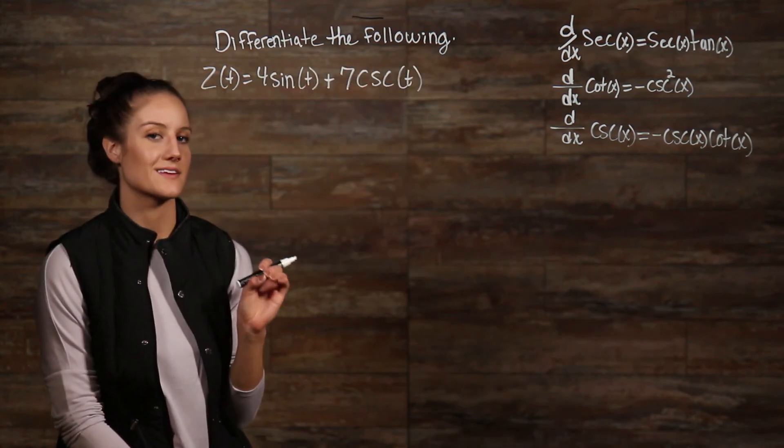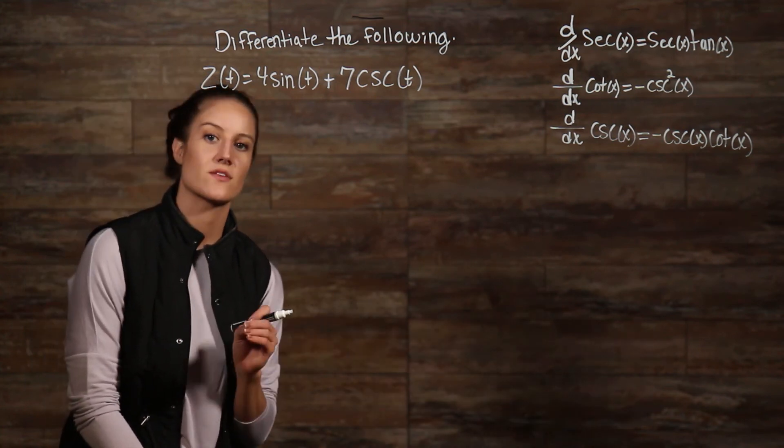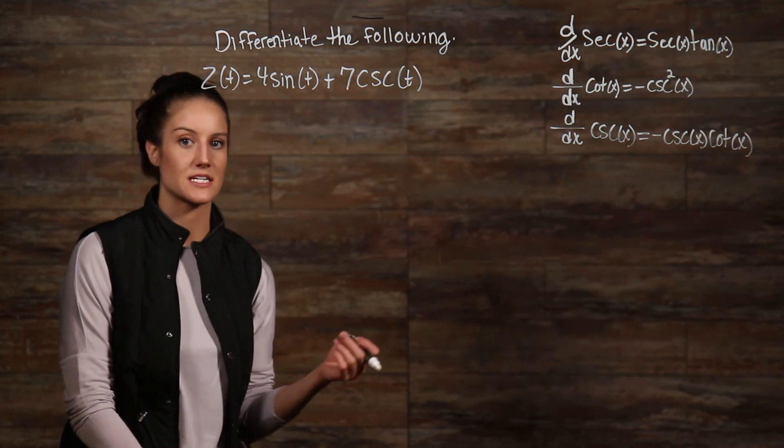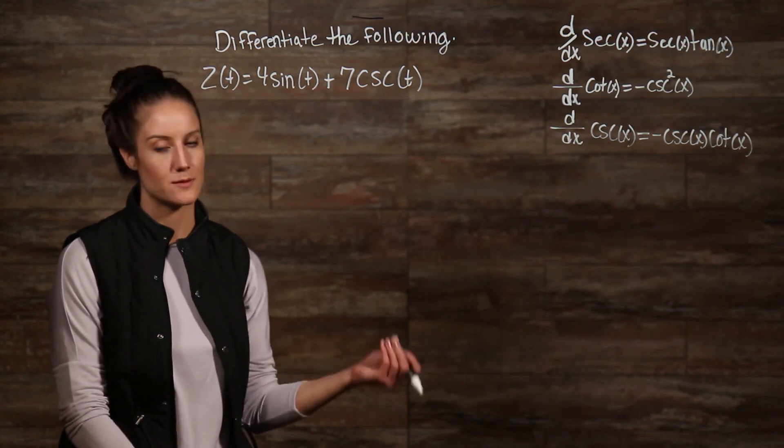This problem is fairly simple. All we need to do is recall the derivative for each of our functions. The derivative of sine is cosine and the derivative of cosecant is negative cosecant times cotangent t.